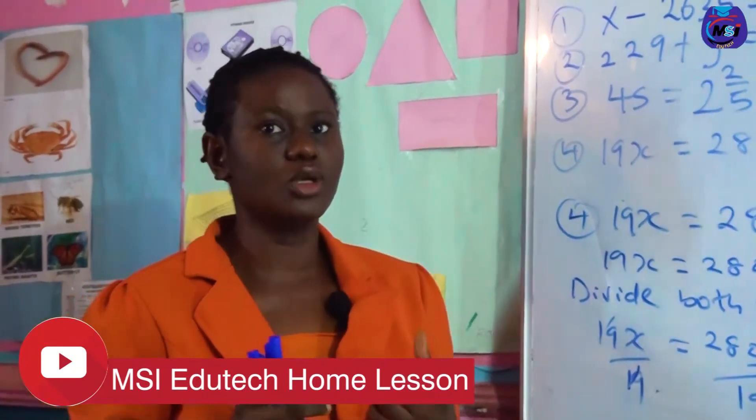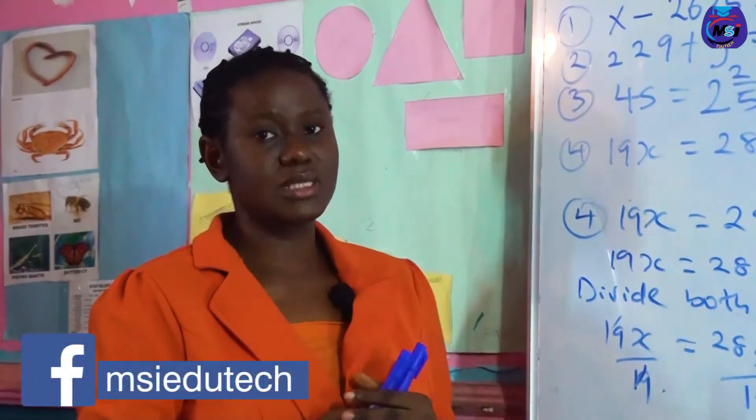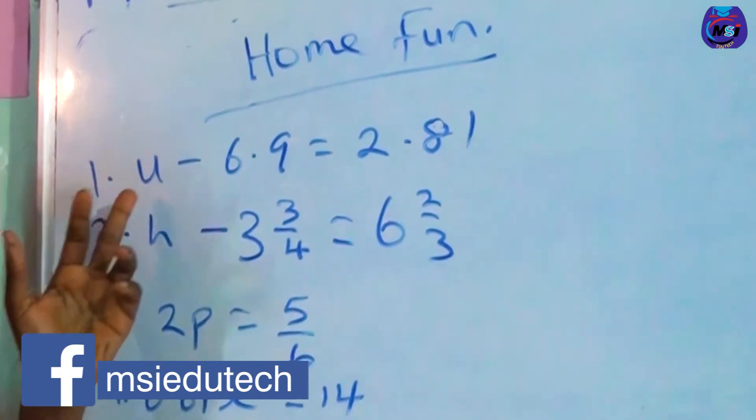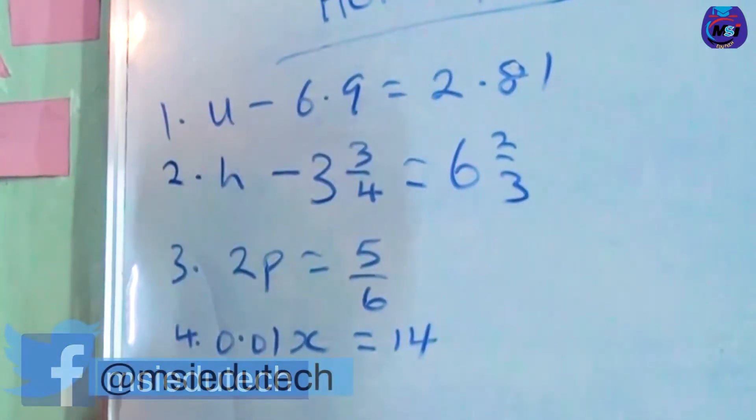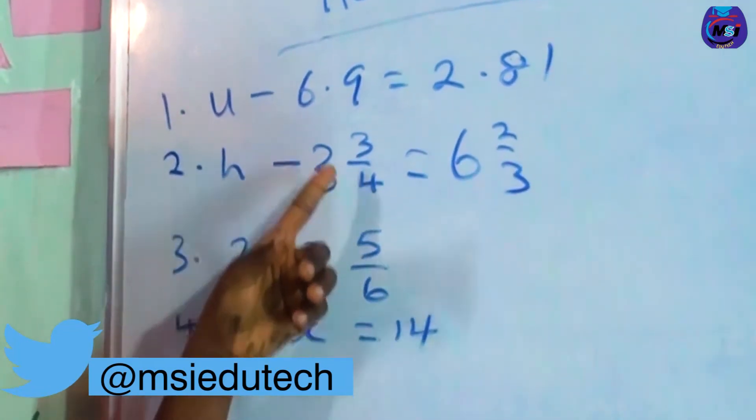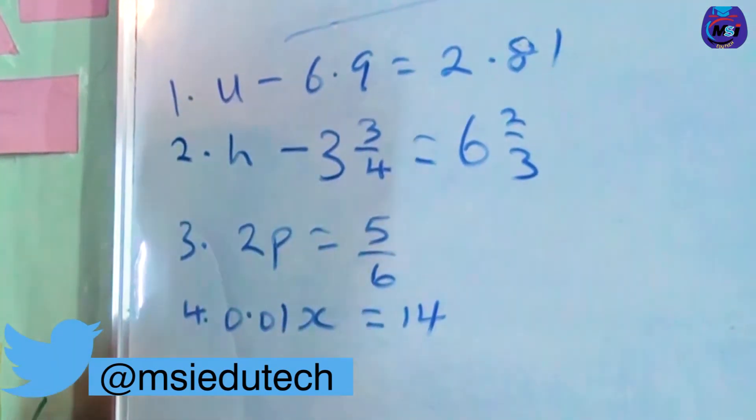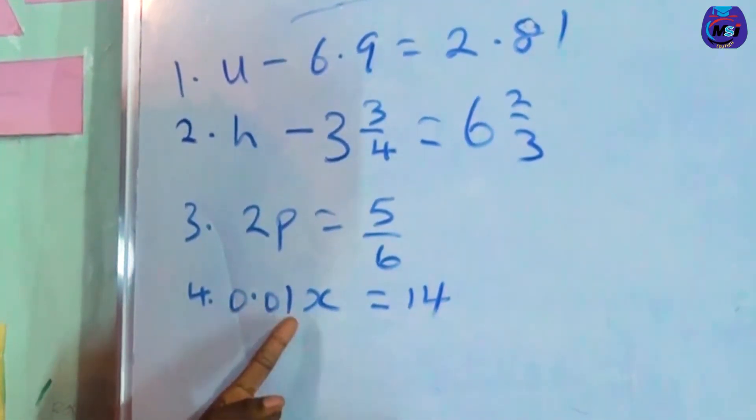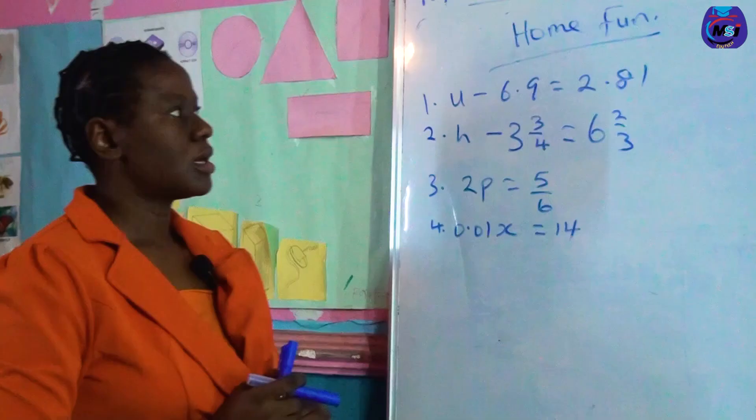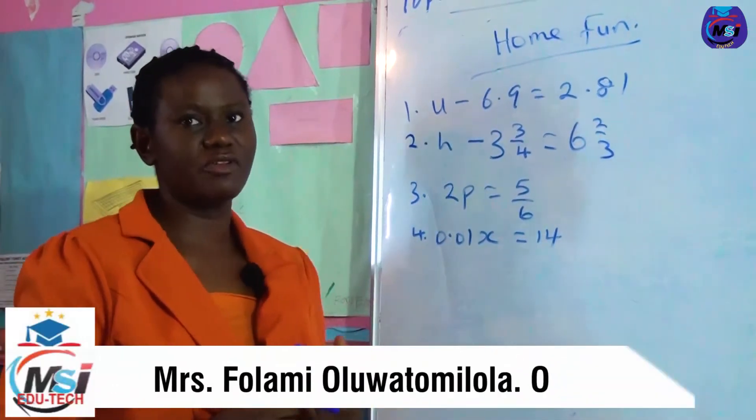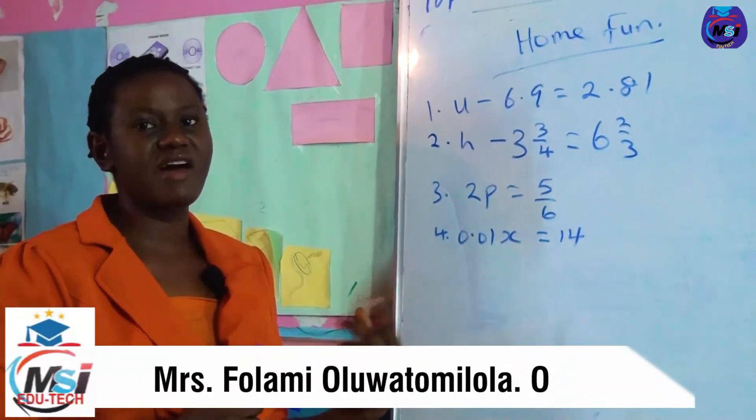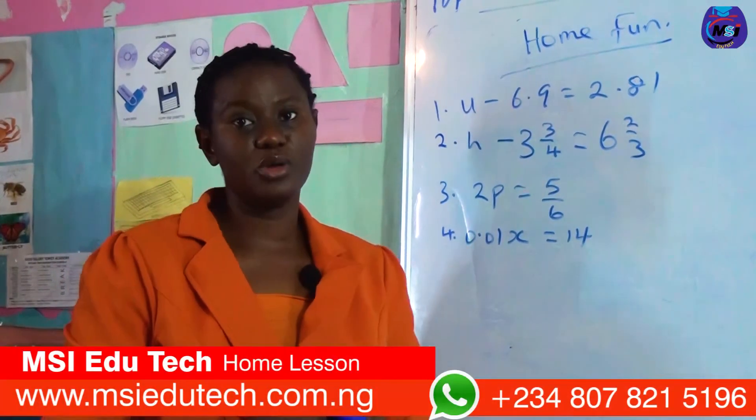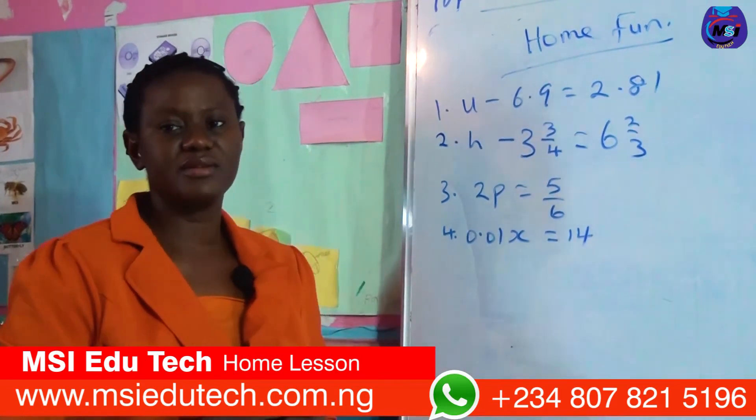Remember, in open sentences the interpretation you give to the question determines the solution you will prefer. Now I'll give you some tasks to do on your own. The questions are: u minus 6.9 equals 2.81, number 2: h minus 3 and 3 over 4 equals 6 and 2 over 3, number 3: 2p equals 5 over 6, and number 4: 0.01x equals 4.213. I'll be glad you are able to solve those questions. If you have any challenge, please give us a feedback through the WhatsApp number displayed on your screen. Thank you. Meet you at the next lesson.